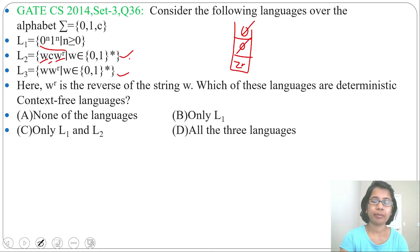Then L3, w w^r. Let's take a string 1, 0, 0, 1. For 1 it will push, for 0 it will push.